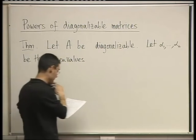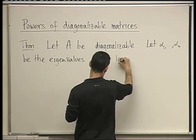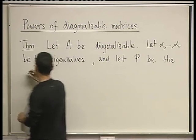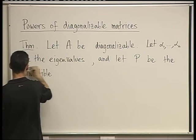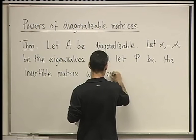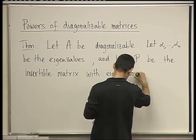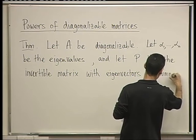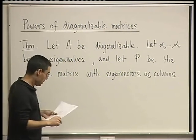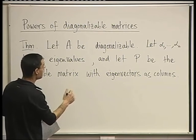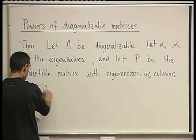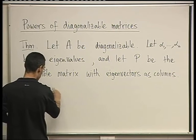And let P be the invertible matrix with eigenvectors as columns. The eigenvectors corresponding to the alphas. So we know that, maybe let's write that, so D, the diagonal form, equals P inverse AP.